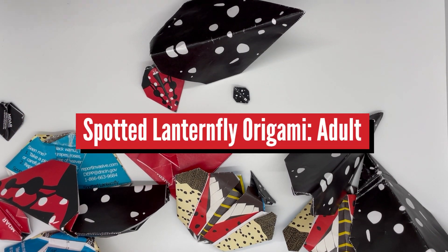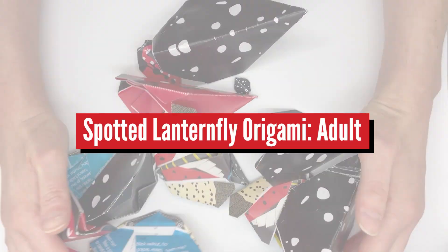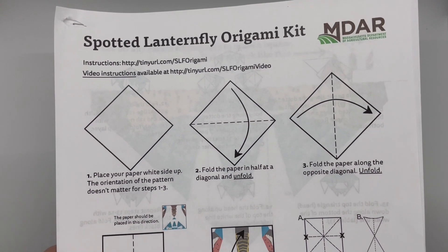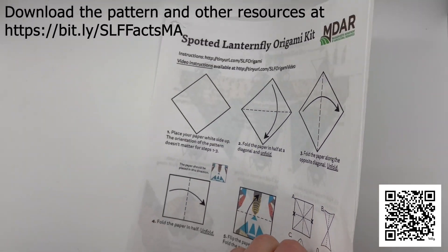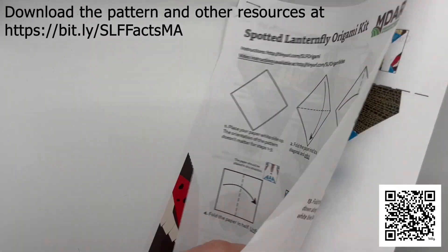Today we're going to make an adult origami spotted lanternfly. These invasive insects may be pretty, but they kill grapes, weaken other plants, and can make a huge mess.